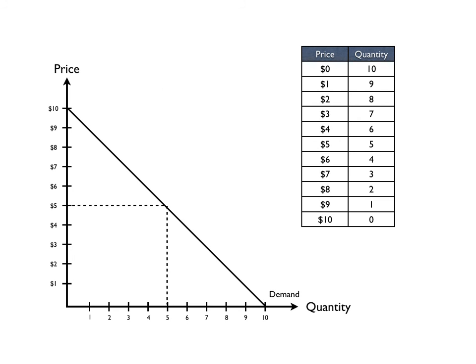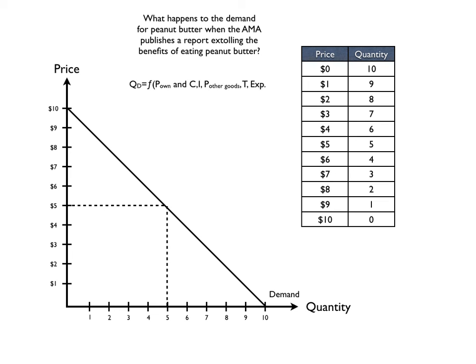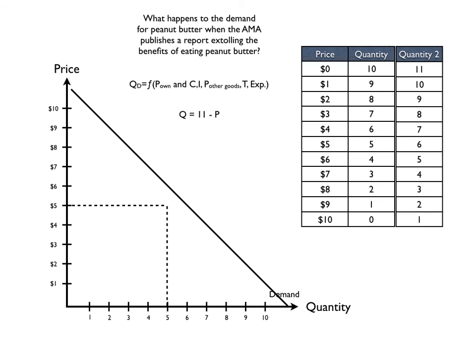We can look at another example starting out at five dollars and five units. What happens to the demand for peanut butter when the American Medical Association publishes a report extolling the benefits of eating peanut butter? It's good for you. It's good for your heart. Whatever it is, therefore people's taste for peanut butter is going to change. And their demand for peanut butter is going to increase. So therefore, at any given price, they're going to want to consume more peanut butter. The change in taste caused an increase in the demand for peanut butter.